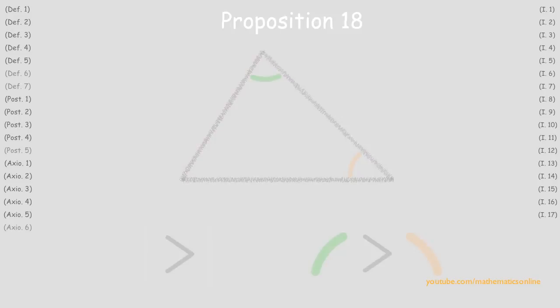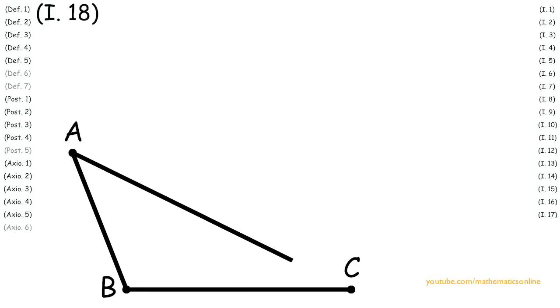To begin this proposition, we are given triangle ABC and line AC is greater than line AB. We will prove that angle ABC is greater than angle ACB.